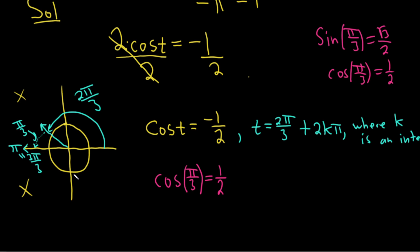And the other one is going to be over here. This one is pi over 3 more. So this one will be 4 pi over 3, because it's pi over 3 plus 3 pi over 3, so 4 pi over 3.